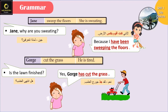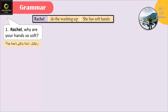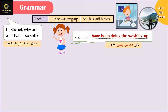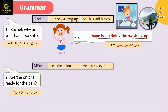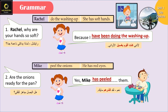Rachel, why are your hands so soft? Because I have been doing the washing up - هي كانت عم تجلي، في عندي استمرارية. Are the onions ready for the pan? Yes, Mike has peeled them - هنن هلأ جاهزين لأنه مايك أشرهم وخلص، ما لساته عم بيأشرهم.